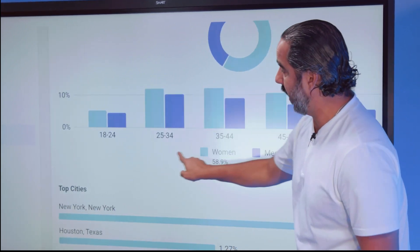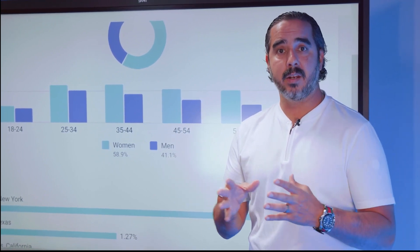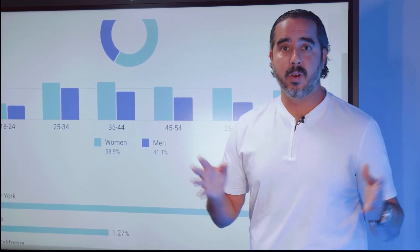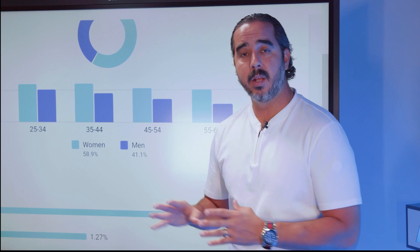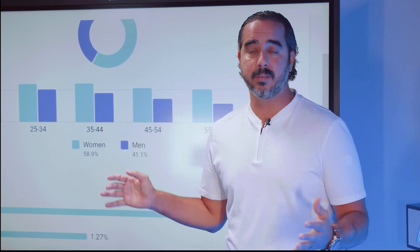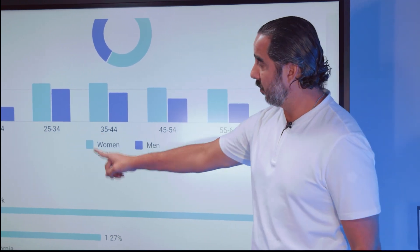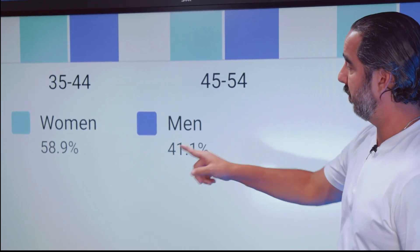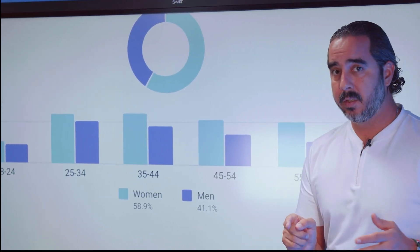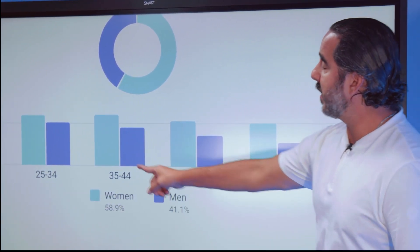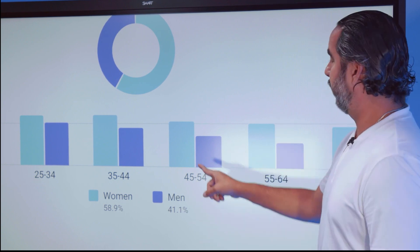We're going to look at some of the demographics in this area. The Facebook opportunity is like never before — we never had something like this available. 20-something years ago none of this existed; the internet world is just getting started. On the United States, 58% of people on Facebook and the Facebook family of apps are female, 41% are men. You can also see the demographics here. Whatever your product is, you're going to find an audience. The dominating audience is the 35–44 and 25–34 demographic, but the 45–54 and other groups are all massive demographics as well.